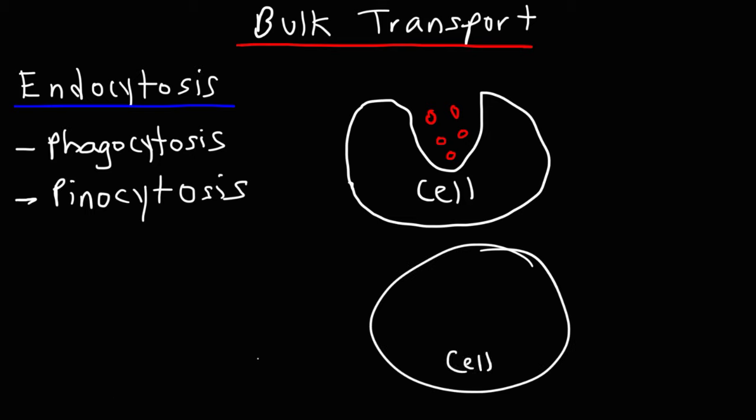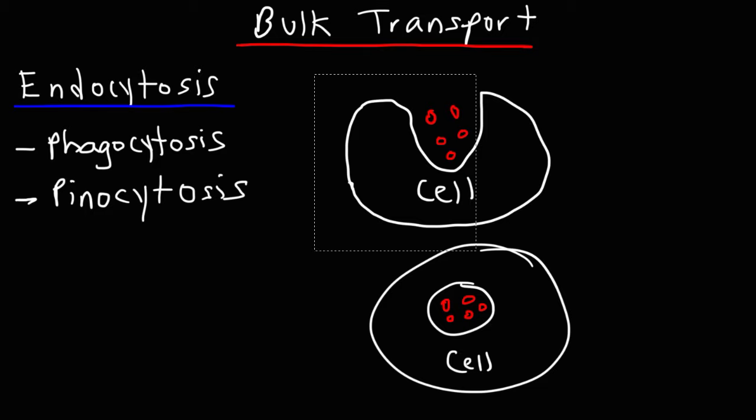you're going to have something that looks like this. So those food particles will be engulfed in a membrane known as a vesicle. So that's an example of pinocytosis.